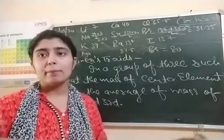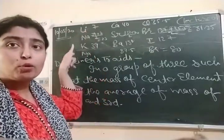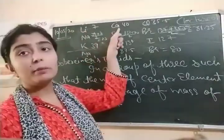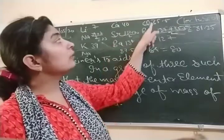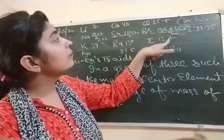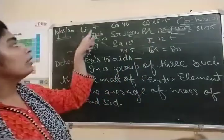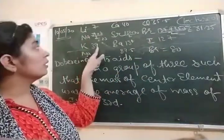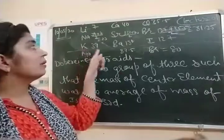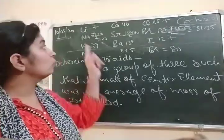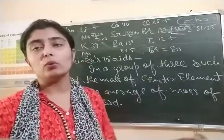Let's take some examples of his grouping. He made a group of lithium, sodium, and potassium. Second group: calcium, strontium, and barium. Third group: chlorine, bromine, and iodine. So his concept was: take the first and third elements - if lithium's mass is 7 and potassium's mass is 39, then by taking the average of both, the mass of the middle element can be calculated.